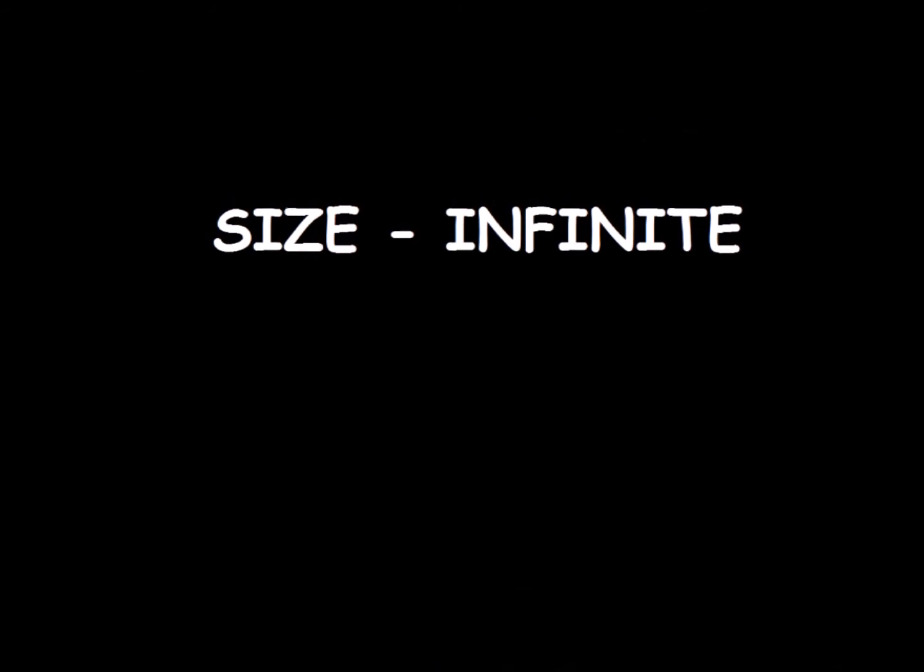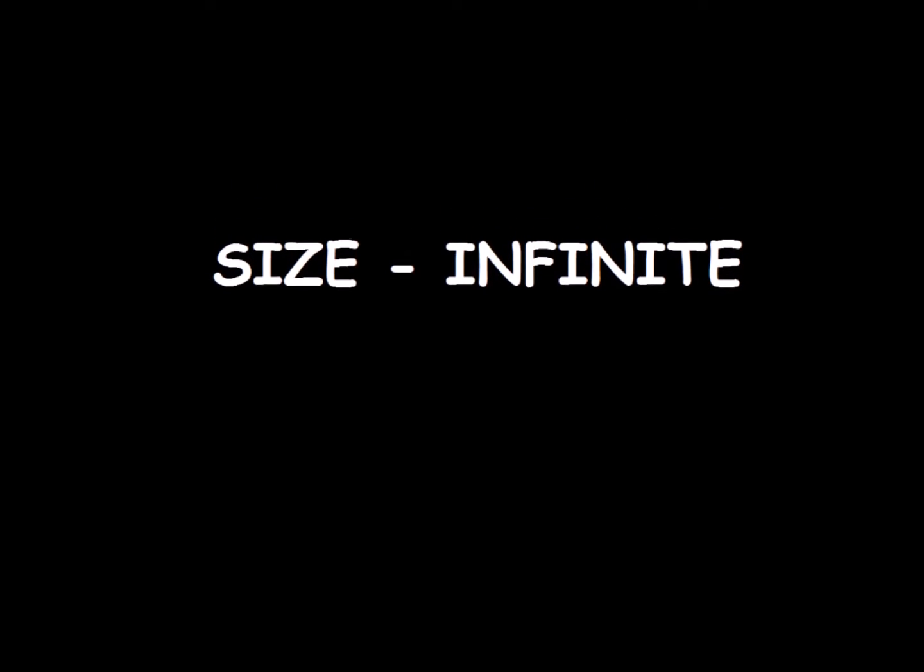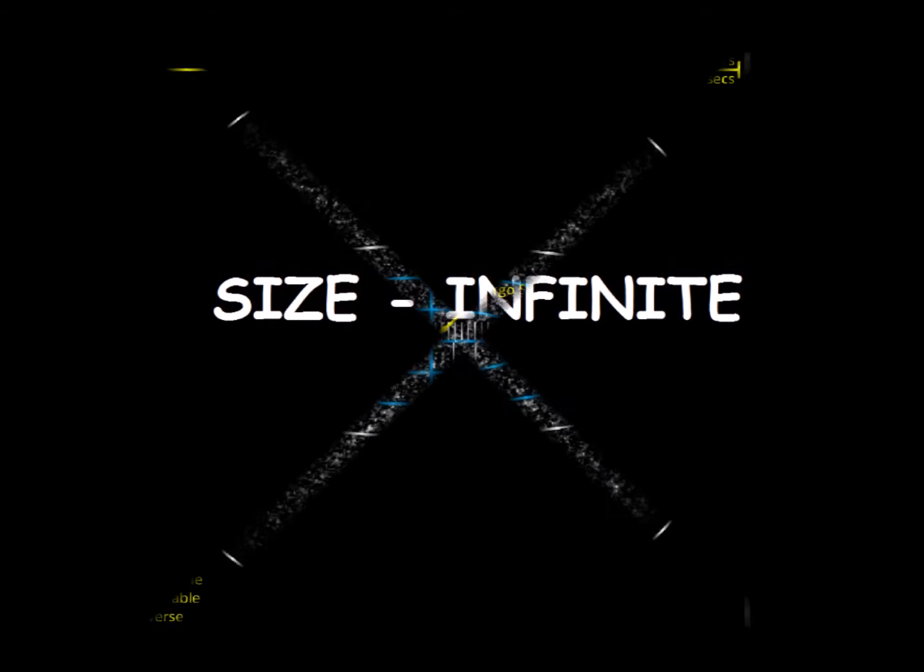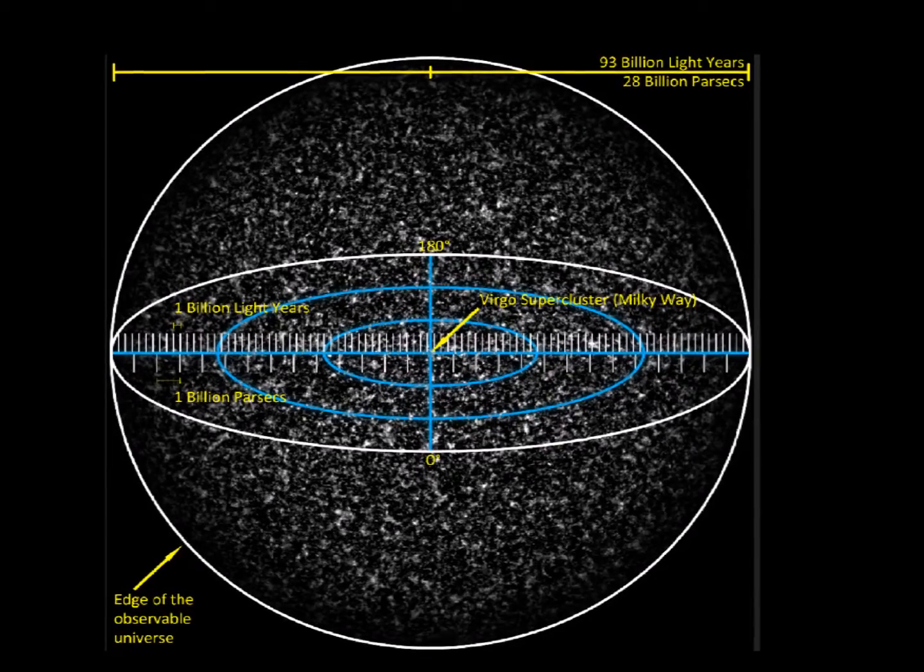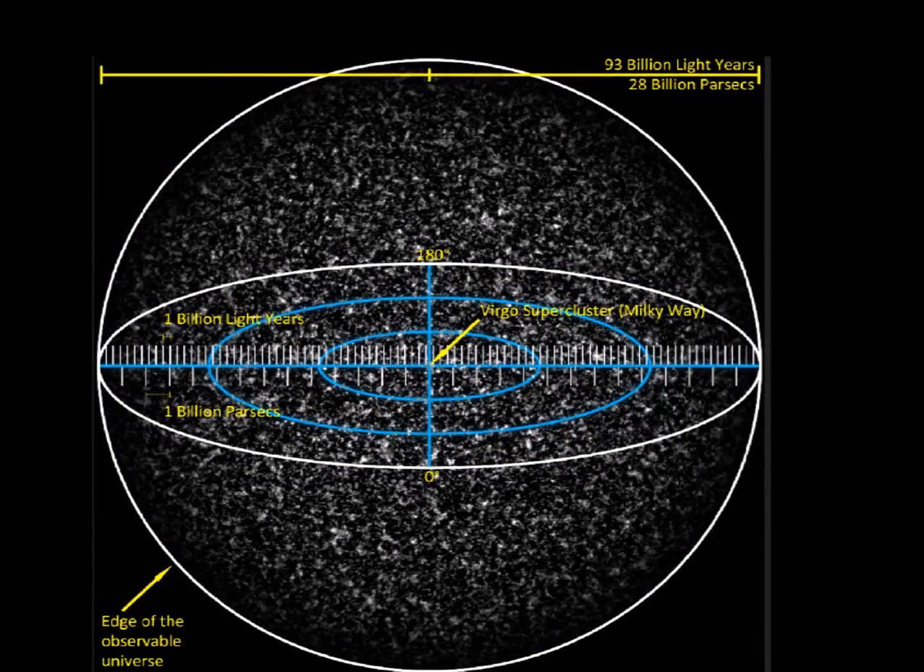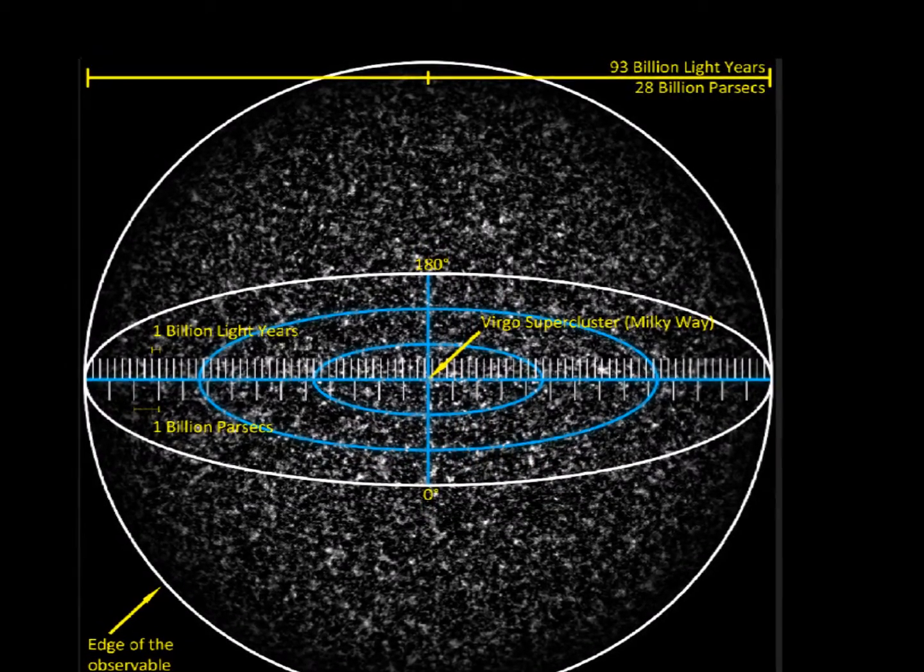The size of the universe is unknown, it may be infinite. The region visible from Earth is a sphere with a radius of about 46 billion light years. It is called the observable universe.